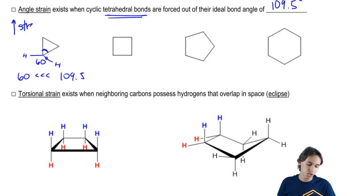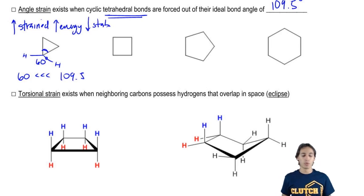And if it's highly strained, guess what that means? That means it's going to have high energy, and if it has high energy then you can guess the rest. That means it has low stability. So let's keep going.